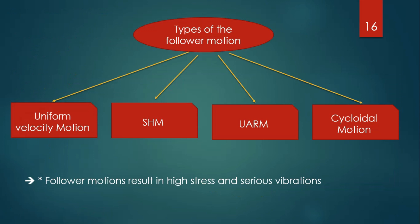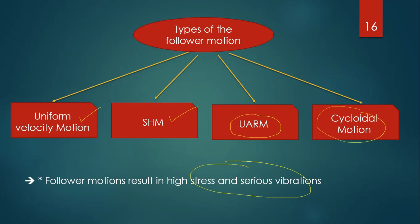Now, the types of follower motions. The cam can be designed to provide any desired motion to the follower — theoretically a large number of follower motions are possible. However, only a few important ones are discussed here, because other follower motions result in high stress and severe vibrations. These are: uniform velocity motion, simple harmonic motion, uniform acceleration and retardation motion, and cycloidal motion.